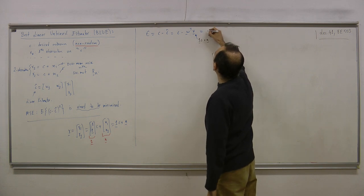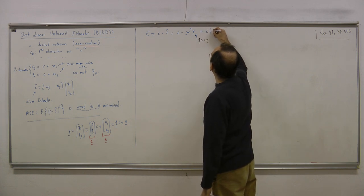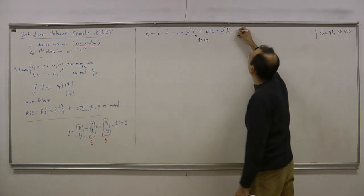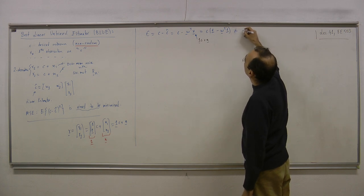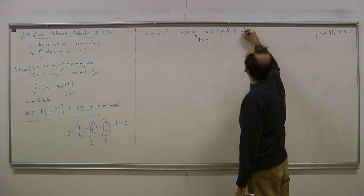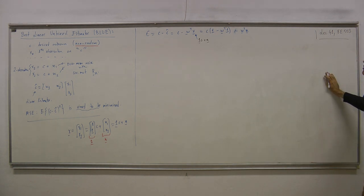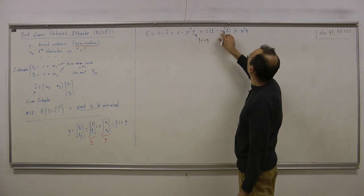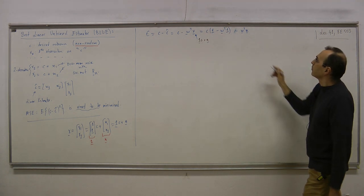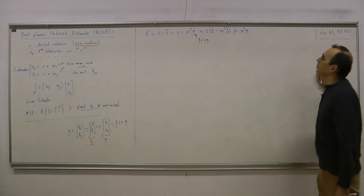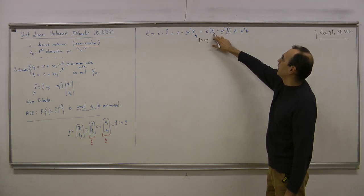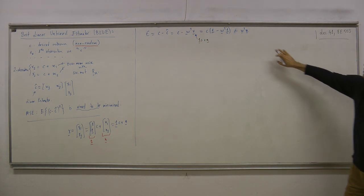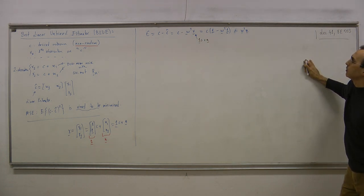Processing this, the error becomes ε = C(1 - W^T [1,1]^T) - W^T N. Both C(1 - W^T 1) and W^T N are scalars — the first is a scalar times a scalar, and W^T N is an inner product.